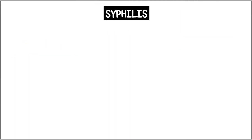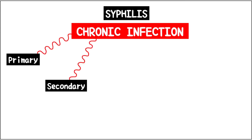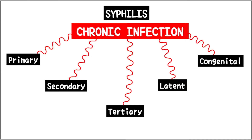Syphilis is a majorly chronic infection ranging from a few days to several decades. It is divided into primary, secondary, tertiary, latent and congenital syphilis, each of which have different features and clinical manifestations. Do check out our video on syphilis to know more about this — link is in the description below.